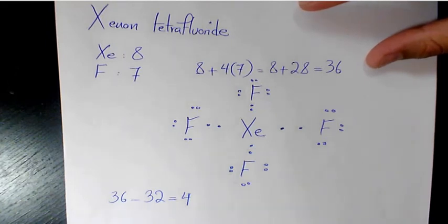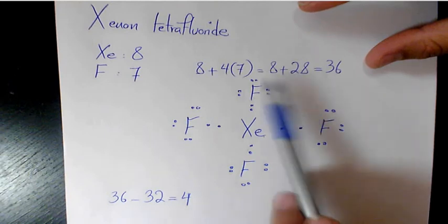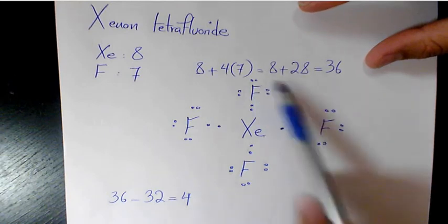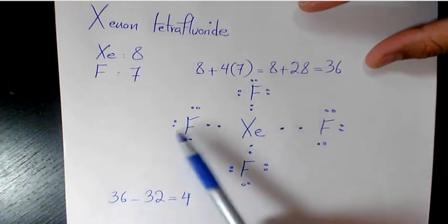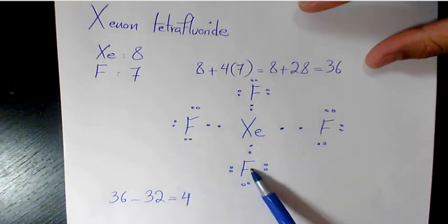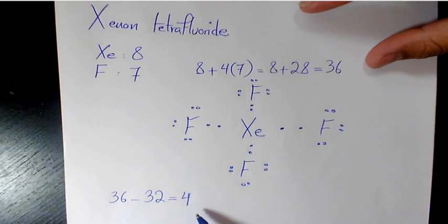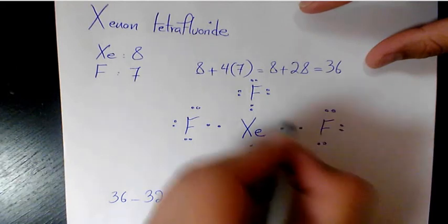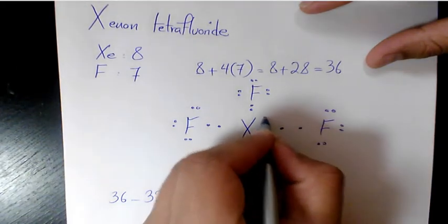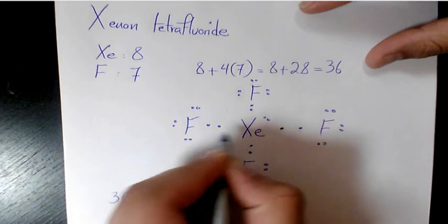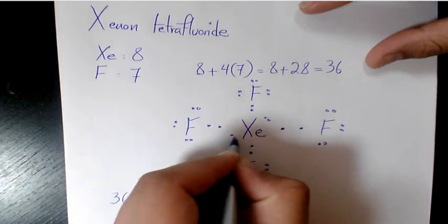We check the octet rule and we need to place the remaining electrons on the central atom. So we put one pair here and one pair here on xenon, giving it two lone pairs.